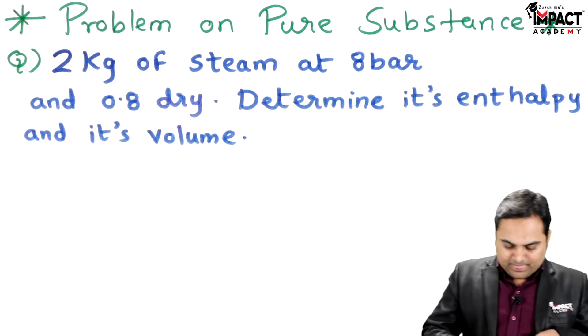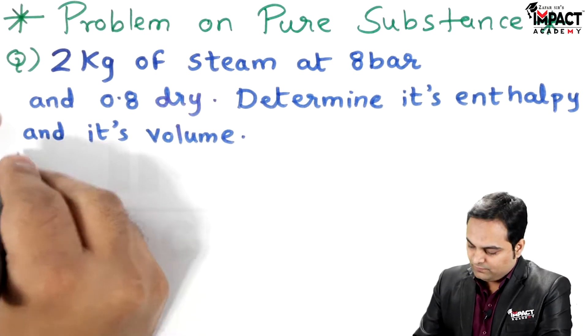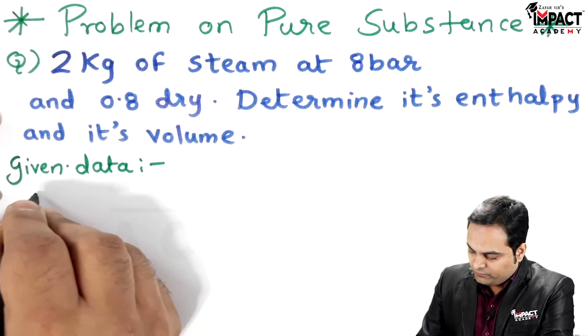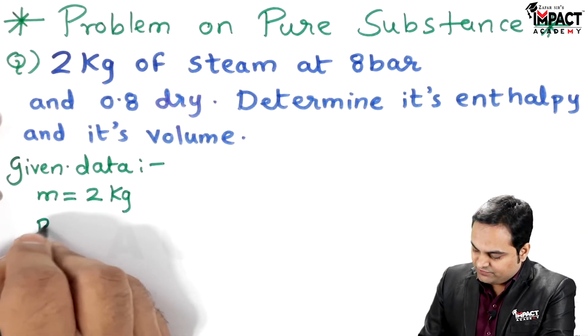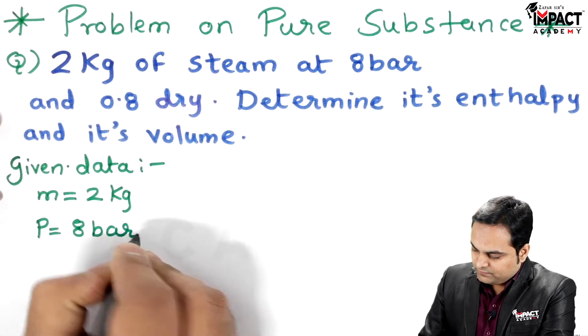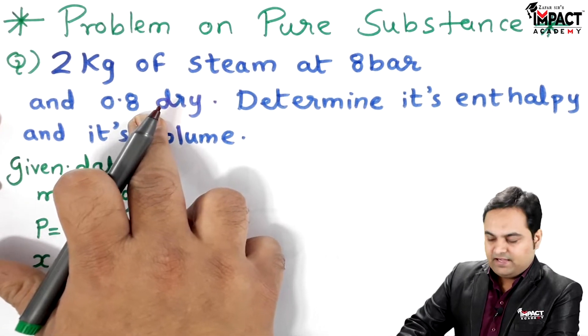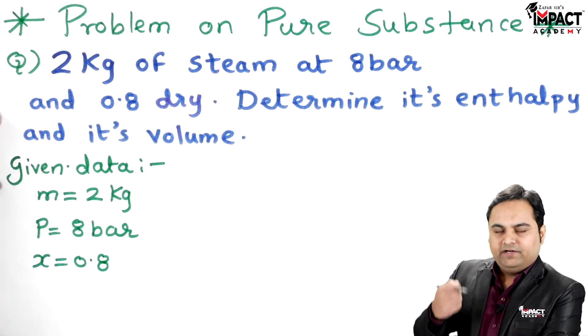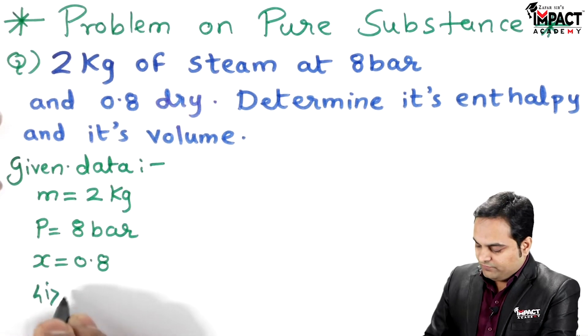Hi friends, in this video I will be explaining a problem on pure substance, also called as properties of steam. The given data is: mass of steam is 2 kg, pressure is 8 bar, and dryness fraction is 0.8 — meaning it is 80% dry and 20% wet, which means it contains 20% moisture or water vapor.